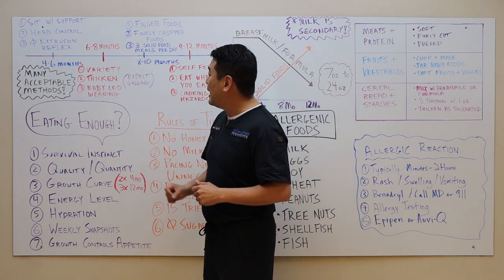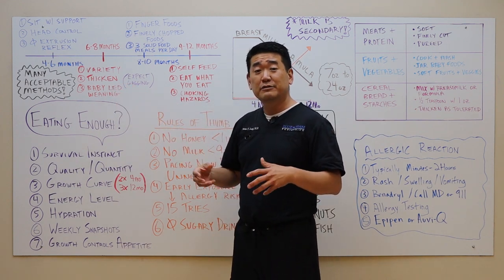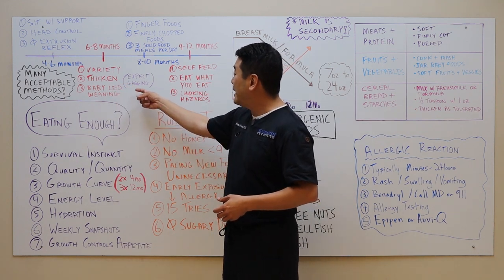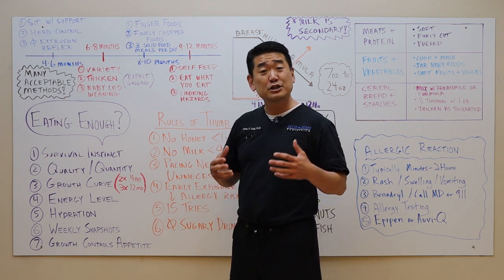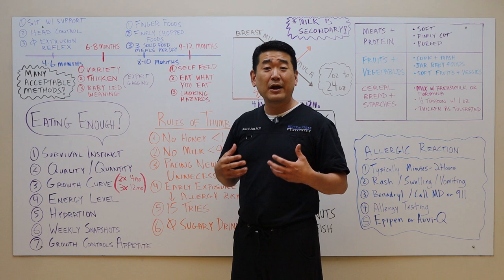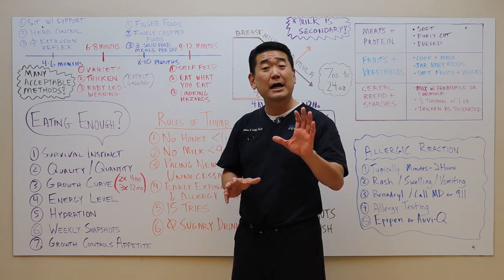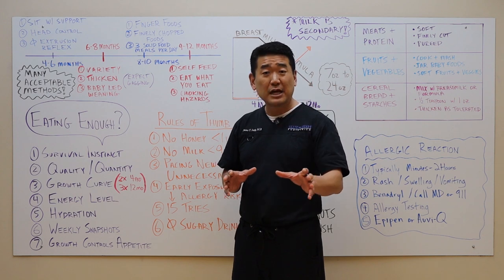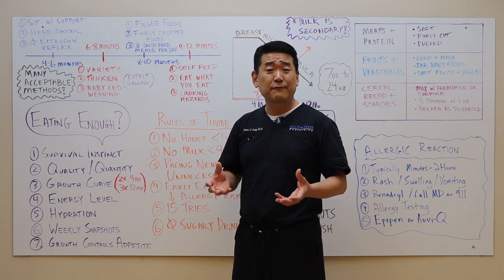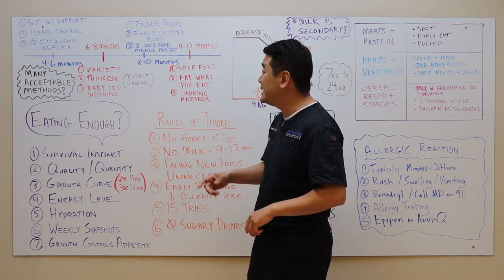As they improve their solid food feeding, you want to make sure that you thicken the food so that they get better at eating solid foods. And you should expect gagging. There is a learning curve with all of this and it may take them several times before they're able to eat without gagging.